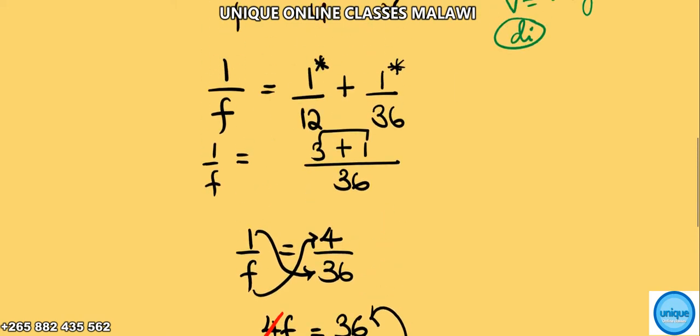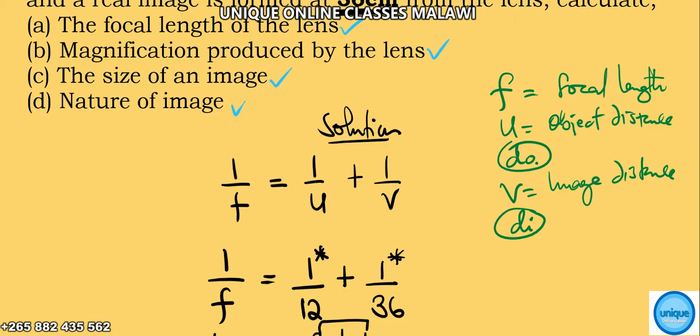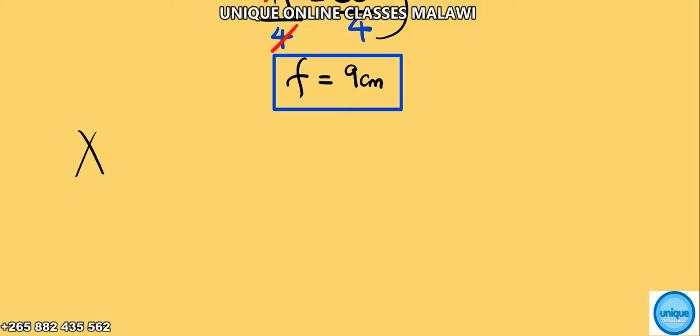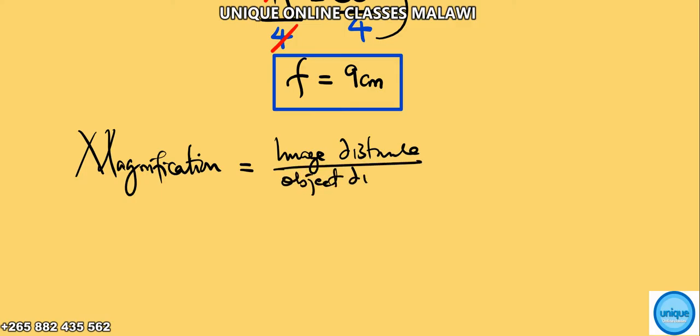Now we can answer the other question: to find the magnification. Magnification is v over u.